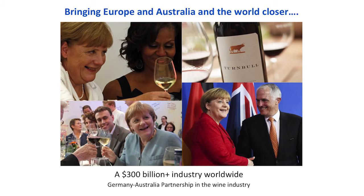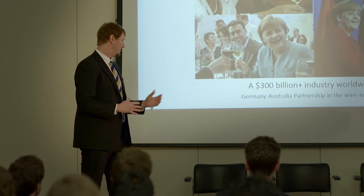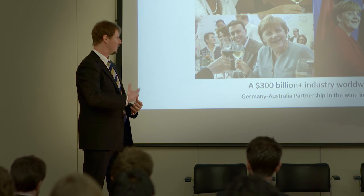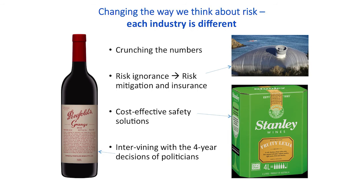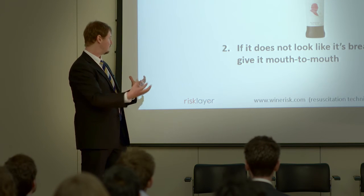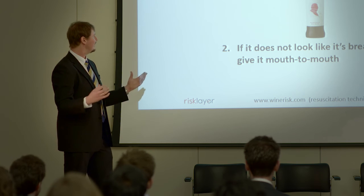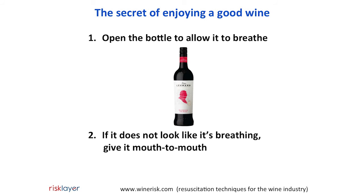Wine brings people together. In Europe, Australia and the world, it's a $300 billion industry, and it was earmarked in the Germany-Australia partnership as one of the few industries taken on by both governments. When we look at industry risk, we try to crunch the numbers, and we hopefully will move from risk ignorance to risk mitigation and insurance. We need to find cost-effective safety solutions that integrate with the four-year decisions of politicians. We've developed a website to hopefully help wineries. And I'll leave you with the secret of enjoying a good wine: open the bottle to allow it to breathe, and if it doesn't look like it's breathing, give it mouth to mouth.